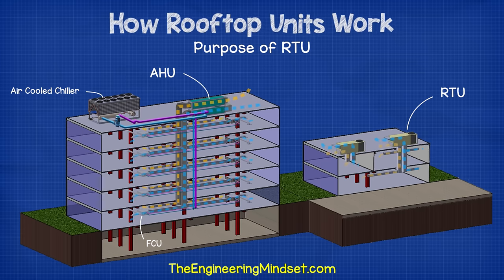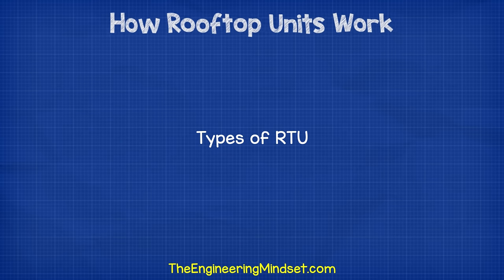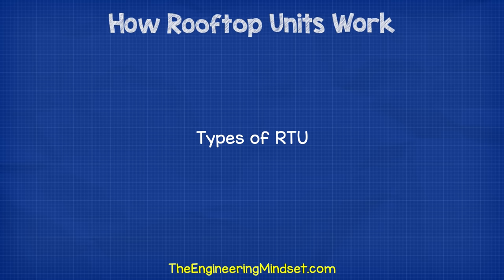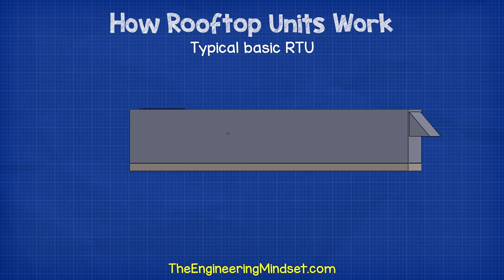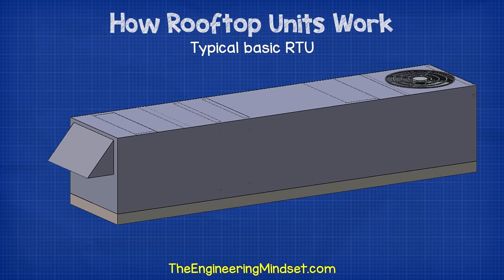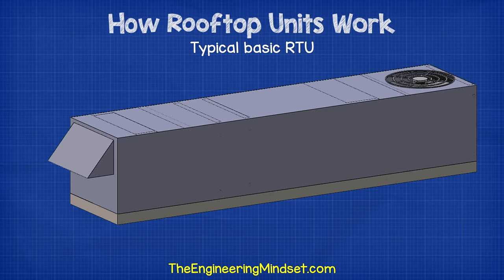There are many types of rooftop units and we'll look at four different typical versions, starting with the most basic. This first unit is fresh air only, meaning there's no recirculation of air occurring. It takes 100% fresh air and conditions it. The return air is usually removed by an external exhaust fan to balance the air pressure within the building.